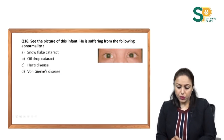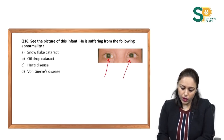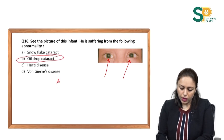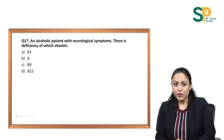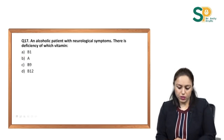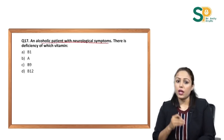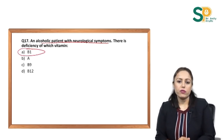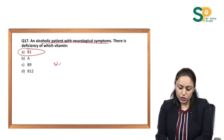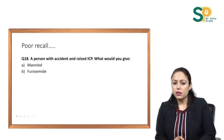Next: a patient's picture shows bilateral oil-drop cataract, which occurs in galactosemia patients. Question number 17: an alcoholic patient with neurological symptoms — whenever an alcoholic patient with neurological symptoms is given, go for thiamine deficiency, that is vitamin B1 deficiency. These patients usually develop a syndrome known as Wernicke-Korsakoff syndrome.